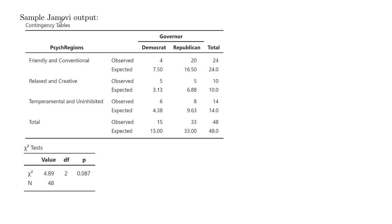Here is some sample Jamovi output for a test of independence. It lists our observed counts here, and then expected counts underneath them — so this is not the same data. And then down here, here's our chi-squared test statistic, our degrees of freedom, and then our p-value: 0.087. And that was for n equals 48 data. So that's what statistical output would look like for a test of independence.